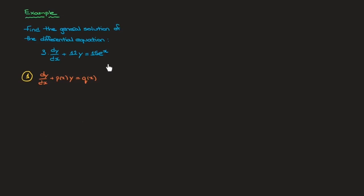Looking at the example we have here, we need to get rid of this three. All we have to do is divide both sides of the equation by three. So that gives us dy/dx plus 12/3, which is 4y, equals 15/3, which is 5e^x. That's step one done — all I did was divide every single term by three.